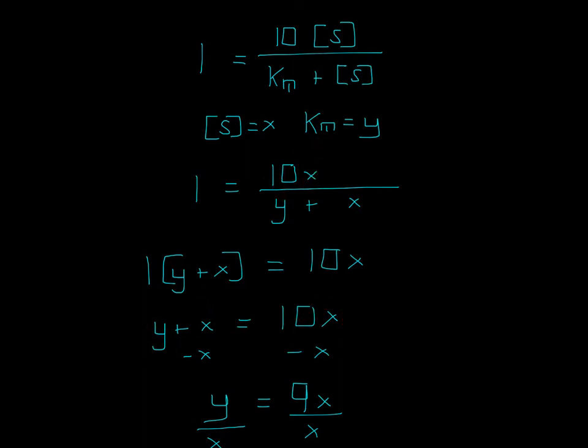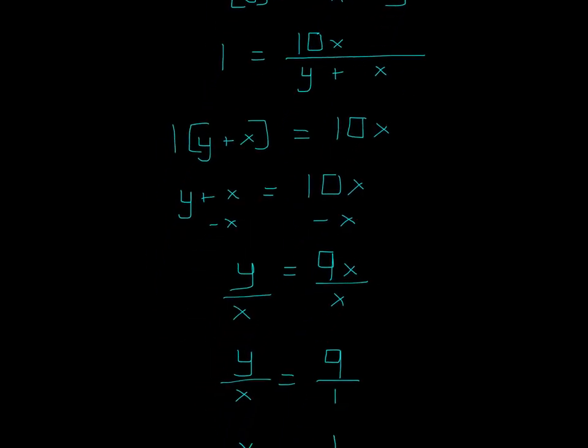And then since this is addition, we just subtract X on each side, and we get 9X equals Y. And then we divide X on each side, and we get Y over X equals 9 over 1.